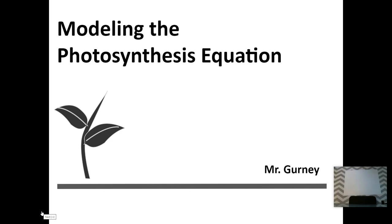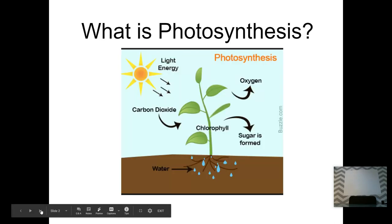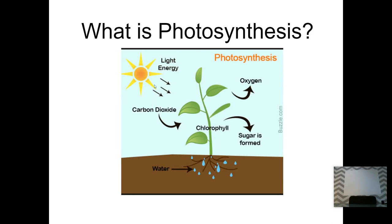First, let's look at what photosynthesis actually is. I have this diagram here, and photosynthesis is essentially a plant taking in sunlight, taking in some carbon dioxide, taking in some water, and then putting out some oxygen and some sugar. It's as simple as that — take in light energy from the sun, carbon dioxide, water, put out sugar and oxygen.